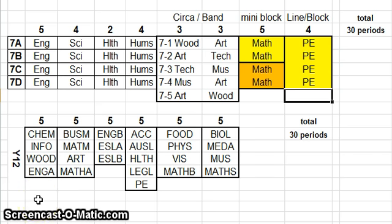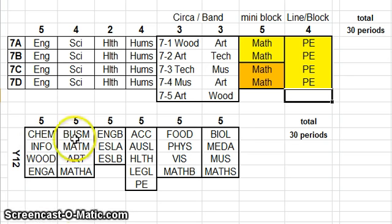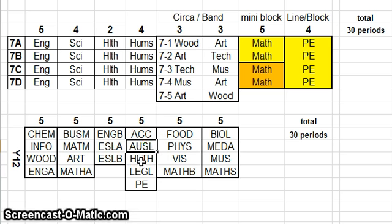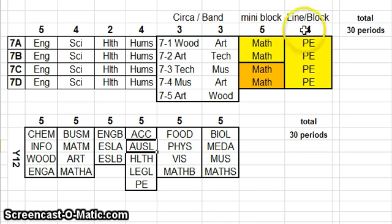Compare that to a Year 12 structure — a fairly typical structure where we mostly have a block or line structure. Chemistry, Info, Wood and English run at the same time for five periods, with another block of different subjects. The key about this structure is that we've tried to give kids choices. A student might be in chemistry and also in maths; they might be an ESL student. This was actually a deaf school where part of the curriculum was learning Auslan, the sign language. Fitting this Year 12 structure together with a Year 7 structure can be quite difficult.